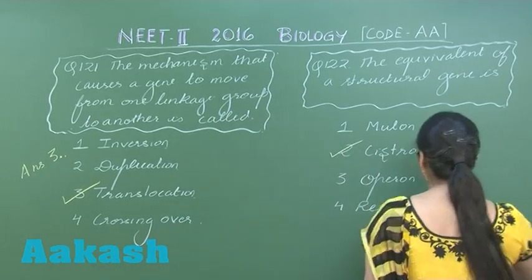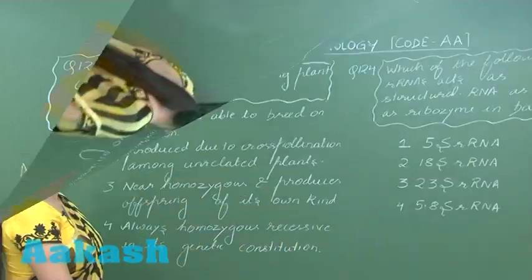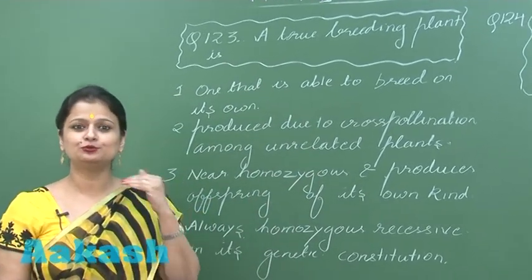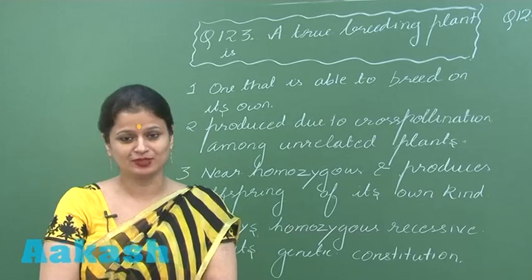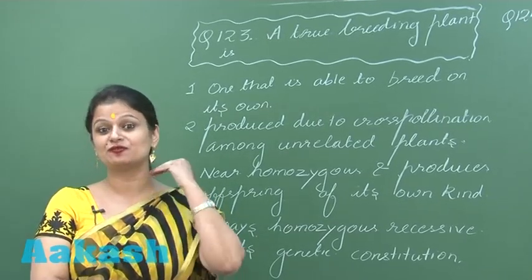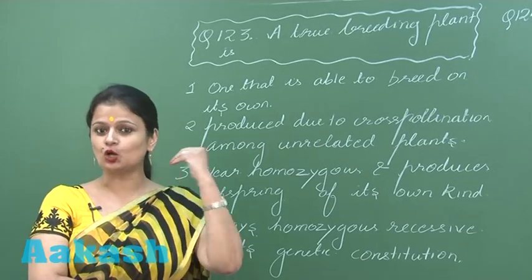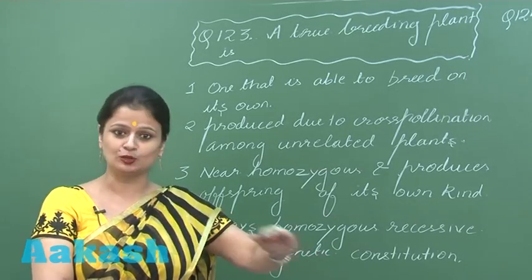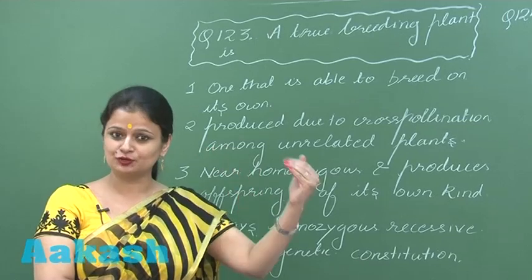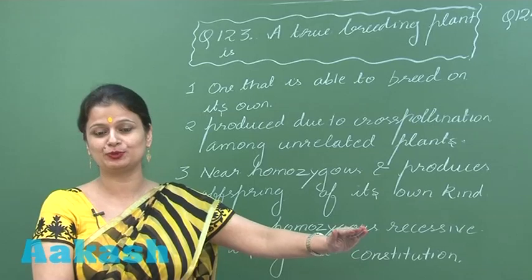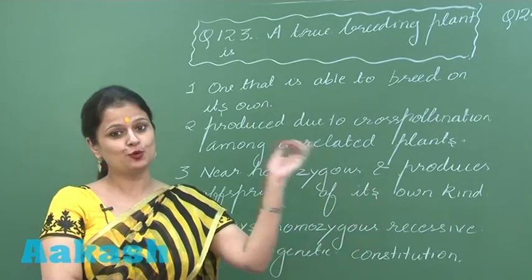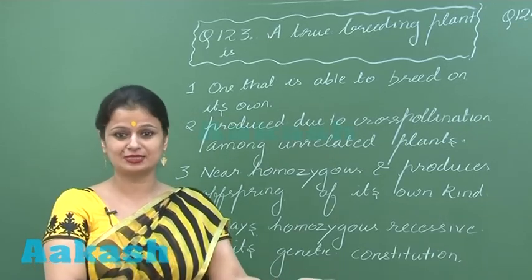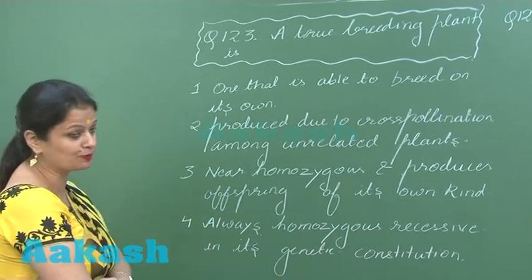Question 123: a true breeding plant is a homozygous plant. This plant produces offspring which are of its own kind. For example, if a tall pea plant undergoes selfing, the progeny would show tall traits. Similarly, a dwarf pea plant after selfing produces all dwarf plants. So homozygous plants can be homozygous dominant as well as homozygous recessive.